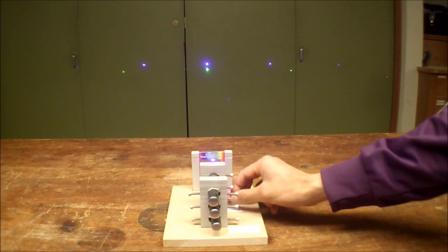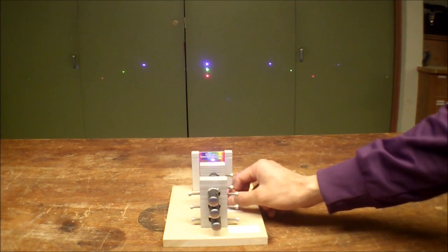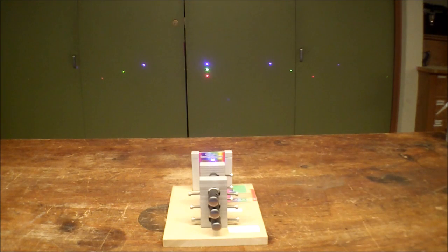And that's it. Blue has the smallest angle, green has an intermediate angle, and red has the largest angle of diffraction.